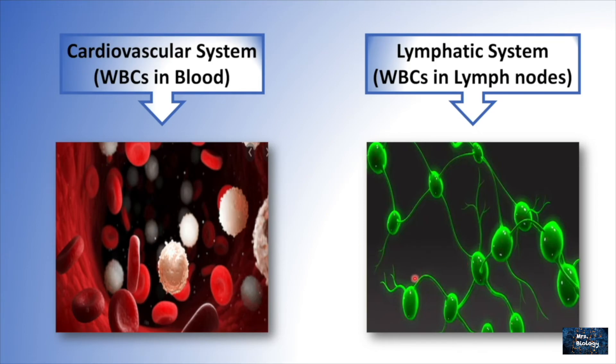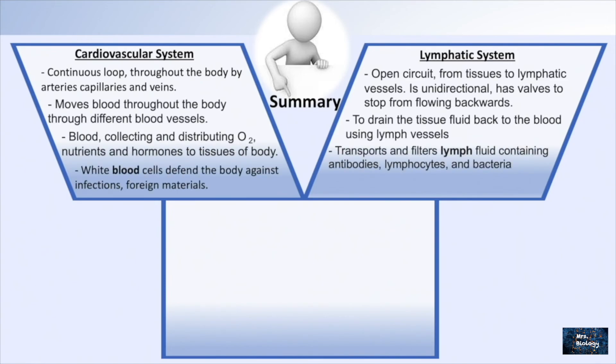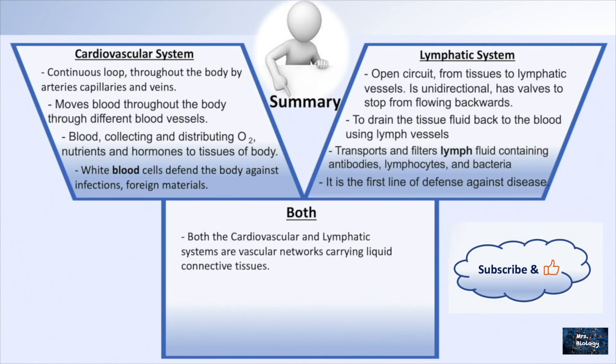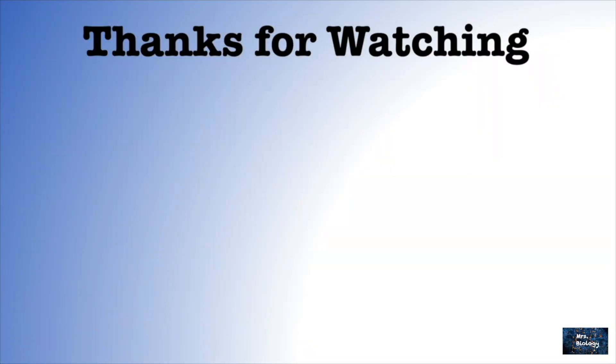At the end, the main differences between cardiovascular system and lymphatic system have been summarized here. And we should remember that both systems are vascular networks carrying liquid connective tissues. Not only that, both of them have vessels transferring liquids and help in body defense. Thanks for watching.